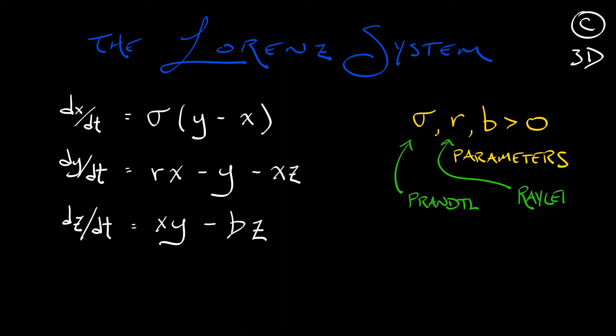Likewise, r is something called a Rayleigh number. And then this last constant, b, has to do with the geometry of the setup, the aspect ratio of the layer of this fluid. Physics, physics, physics. We don't need to worry about that so much.